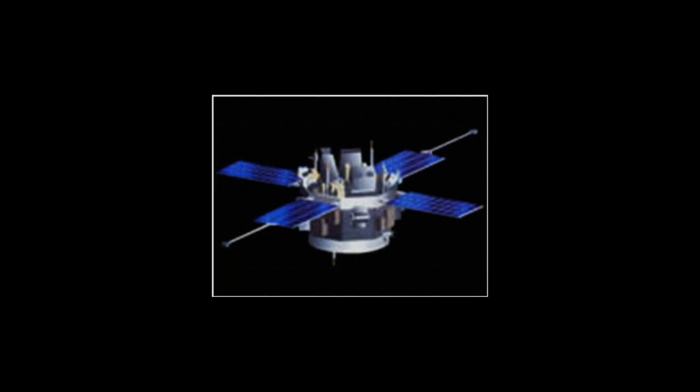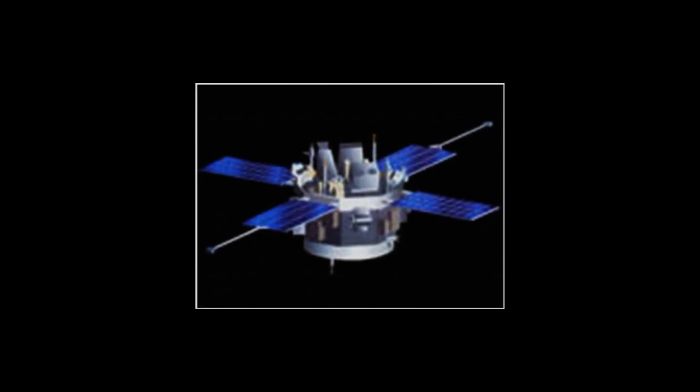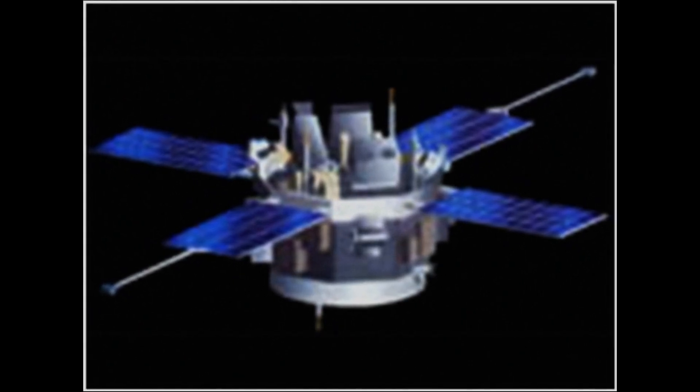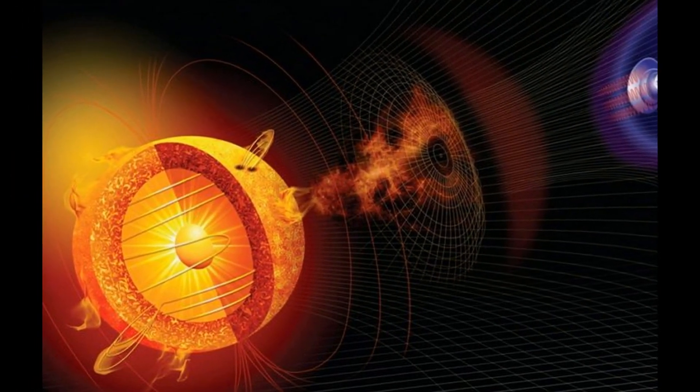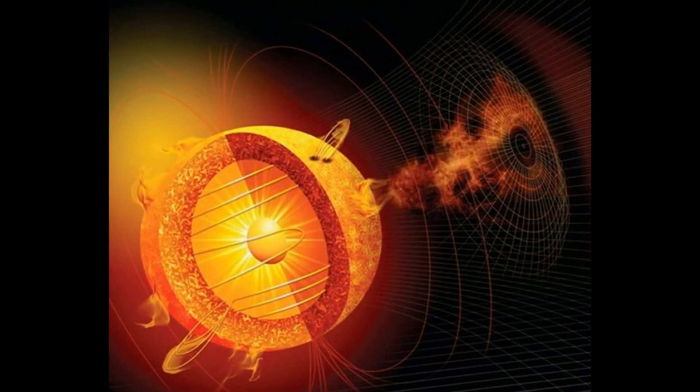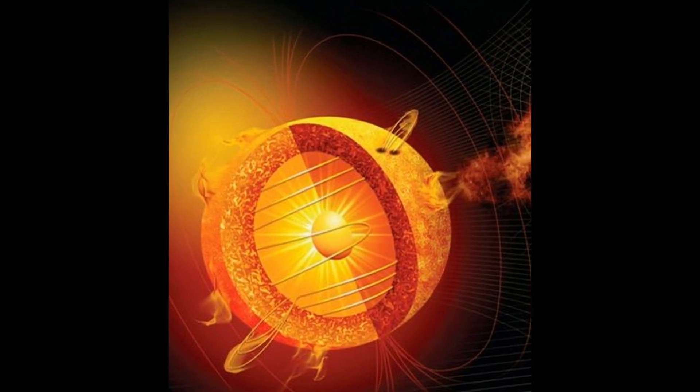Some of our current solar satellite missions include ACE, or the Advanced Composition Explorer. This spacecraft carries six high-resolution sensors and three monitoring instruments that sample low-energy particles of solar origin and high-energy galactic particles. With collecting power 10 to 10,000 times greater than the past, this satellite works from a vantage point of one one-hundredth of the distance from the Earth to the sun.